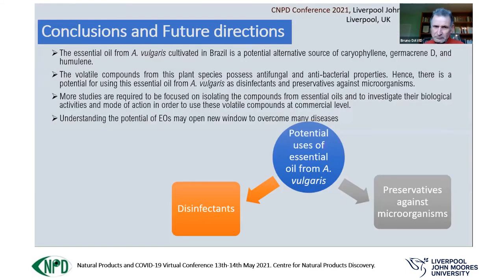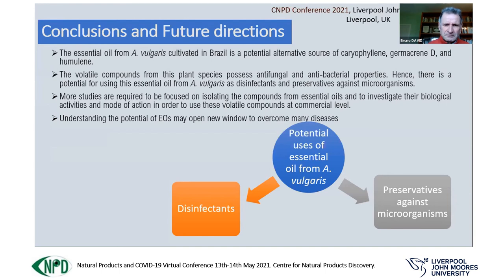In conclusion, the volatile compounds from Artemisia vulgaris cultivated in Brazil have potential as an alternative source of caryophyllene, germacrene D, and humulene. The volatile compounds from this plant species possess antifungal and antibacterial properties, hence there is potential for using this essential oil as a disinfectant and preservative against different microorganisms. More studies are required focusing on isolating specific compounds from essential oils rather than using the whole oil, in order to investigate their biological activities and mode of action for commercial use. Understanding the potential of essential oils may open new windows to overcome many diseases.